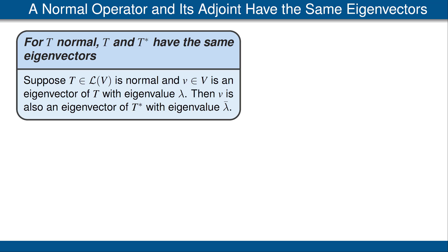Our next result states that if T is a normal operator and v is an eigenvector of T with eigenvalue λ, then v is also an eigenvector of the adjoint T* with eigenvalue the complex conjugate λ̄. A weaker result holds without the normality hypothesis: if T is any operator and λ is an eigenvalue of T, then λ̄ is an eigenvalue of T*. However, in general the eigenvectors for T and T* are quite different. This result says that for normal operators, those sets of eigenvectors are the same.